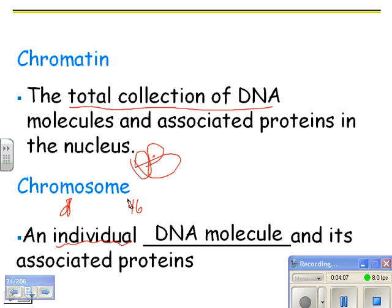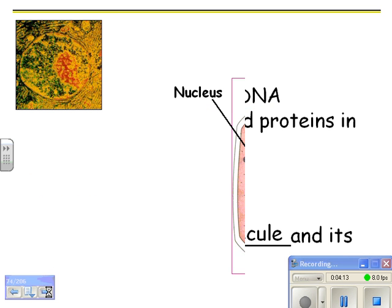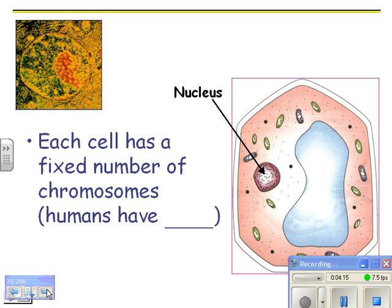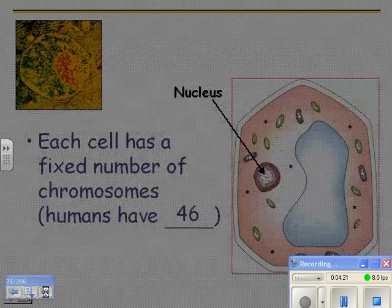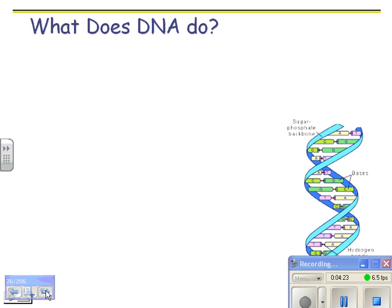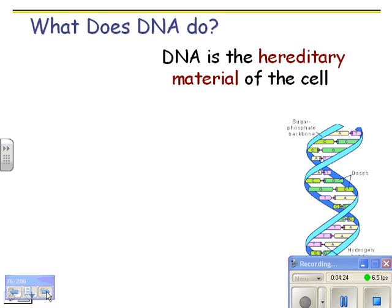A chromosome is one molecule of DNA, and it doesn't matter if it's condensed or spread out. In people we have 46 chromosomes. If you count all those chromosomes together, the whole thing would be called chromatin. Each cell has a fixed number of chromosomes — humans have 46.